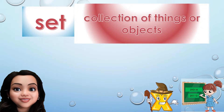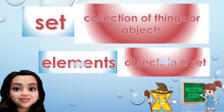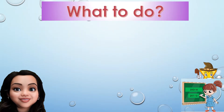What is a set? A set is a collection of things or objects. We have elements. Elements are objects in a set.